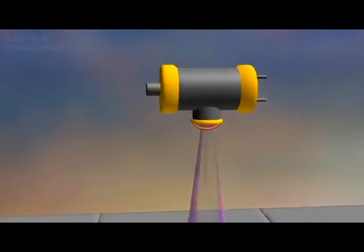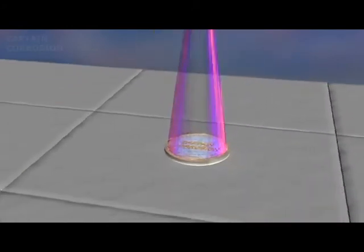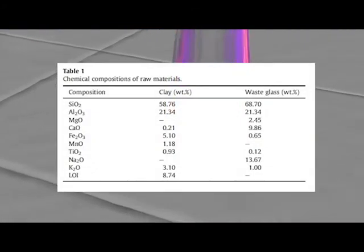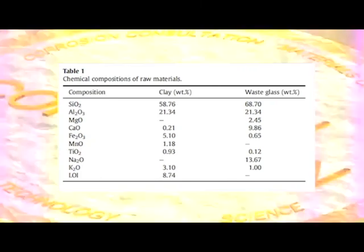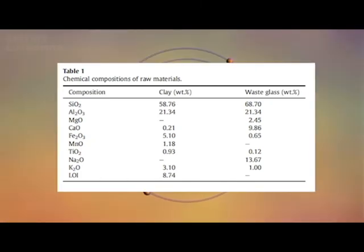The preparation of the test specimens: chemical analysis of raw materials began by using X-ray fluorescence on the raw materials. This identified the composition of both clay and waste glass. The data is shown on the table present on the screen.